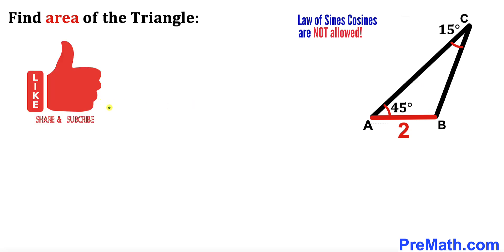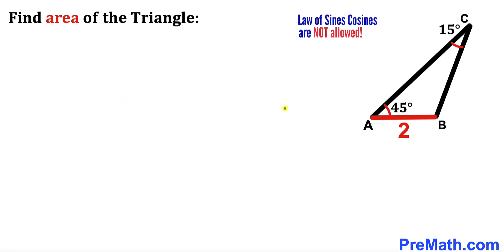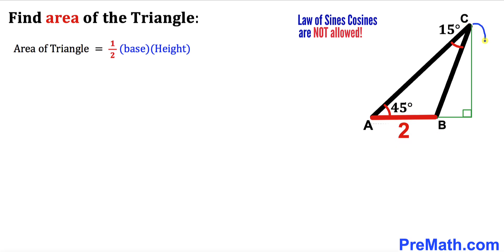Please don't forget to give a thumbs up and subscribe, and please keep in mind that this figure may not be 100% true to the scale. Let's get started. We are not supposed to be using the law of sines and cosines to find the area. Let's recall the area of triangle formula: area equals one-half times base times height. Our base is 2 and we label the height by lowercase h.